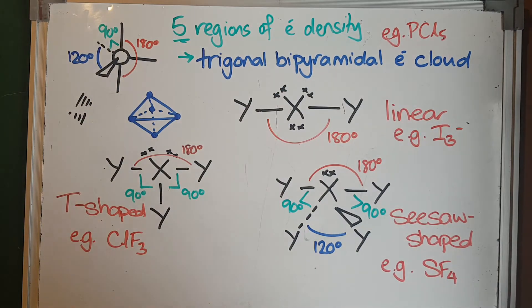If I have two lone pairs of electrons and three atoms bound to it, something like chlorine trifluoride—ClF3—where each of these Y's is a fluorine and the X is chlorine, and chlorine is having an expanded octet.